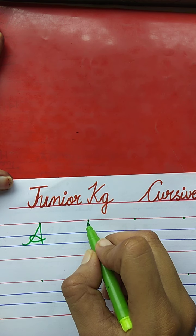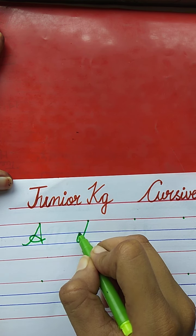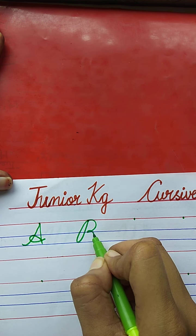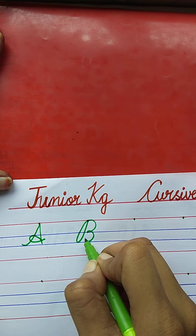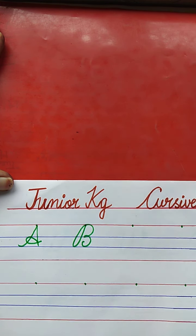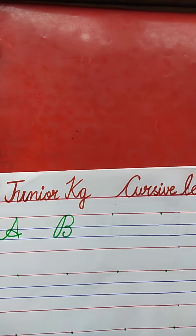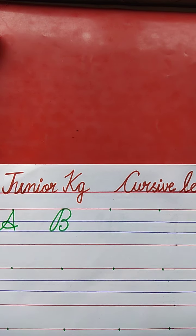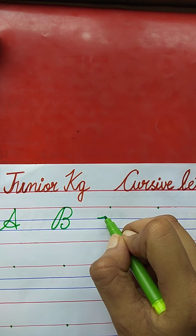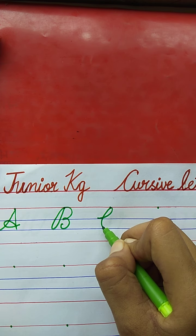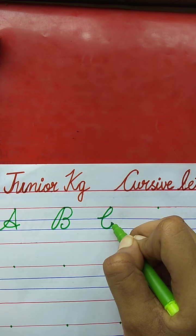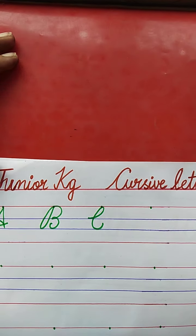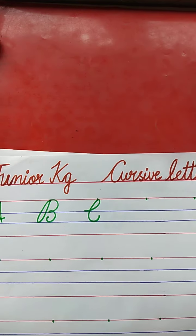Second is B. B for Ball. The spelling of Ball: B-A-L-L. Now tell me the next letter. C. C for Cat. The spelling of Cat: C-A-T.